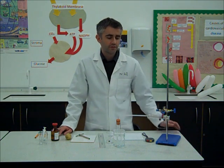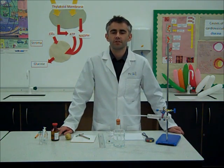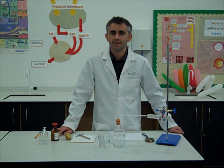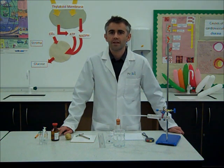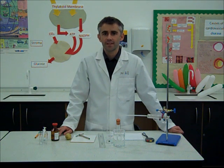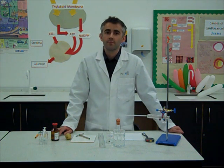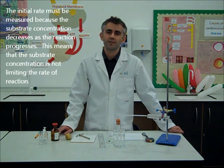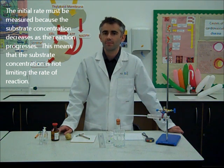I'm going to use a gas syringe to measure the volume of oxygen that's produced every 10 seconds for 2 minutes. From that I can plot a graph to work out the initial rate of reaction. The initial rate of reaction is very important because potentially at the start of the investigation is the only time when the substrate is not limiting the rate of reaction.